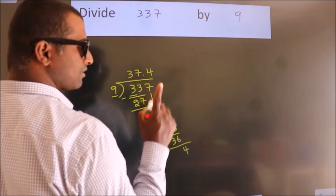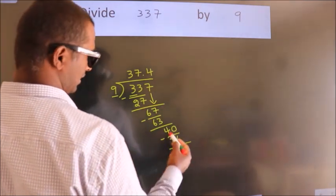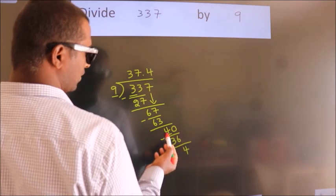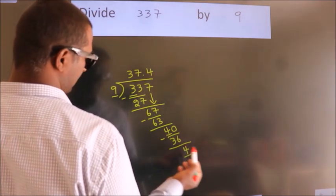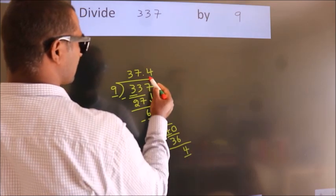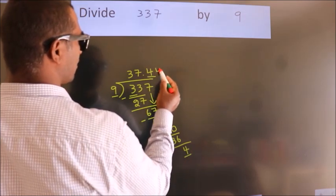Now you observe. Here we had 4, and we got 4 again. That means this number keeps on repeating.